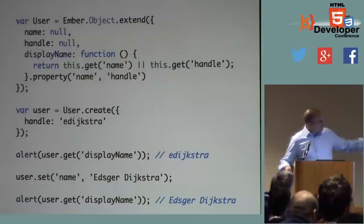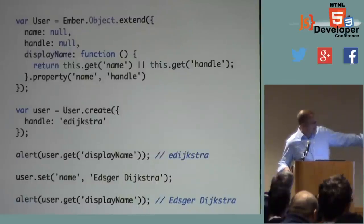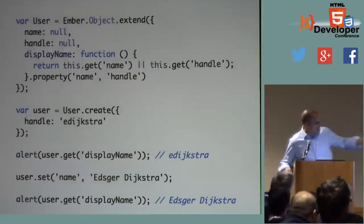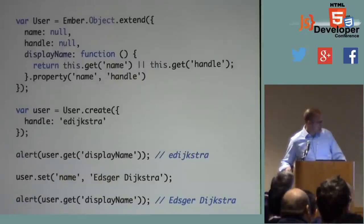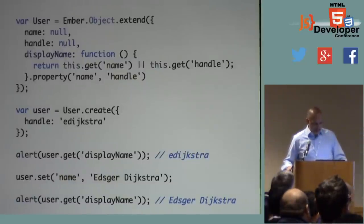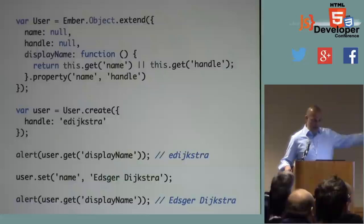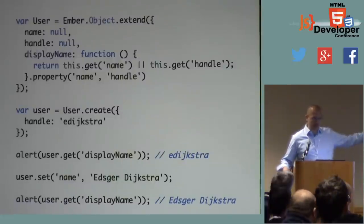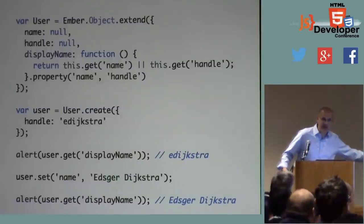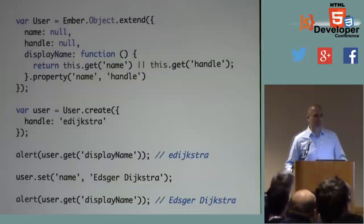Then on the next line we say user.set name, Edgar Dykstra. Now when we get the display name, the user does have a name, so that is the new value of the computed property.